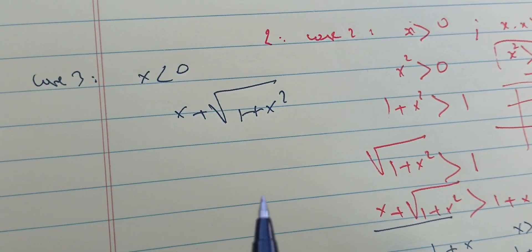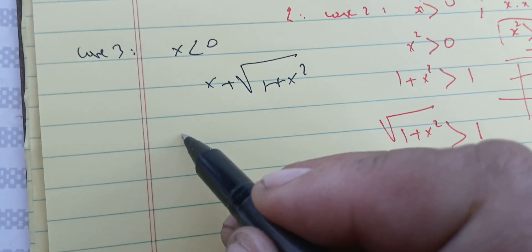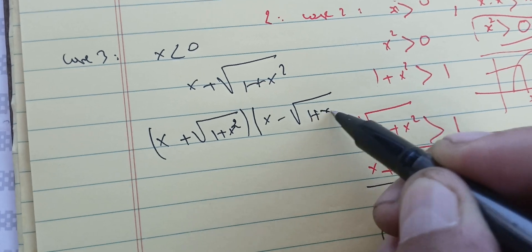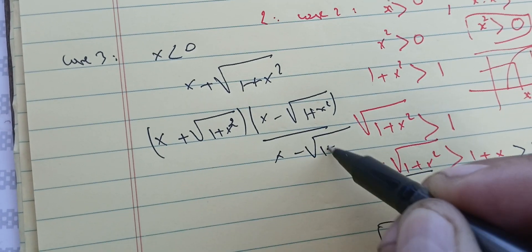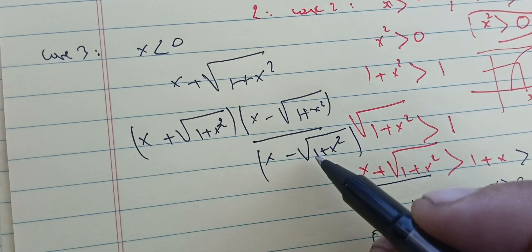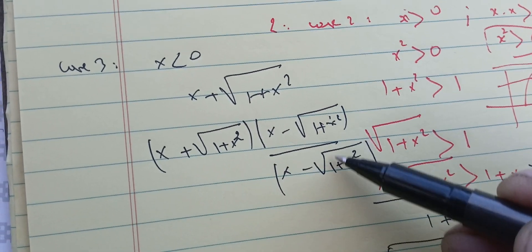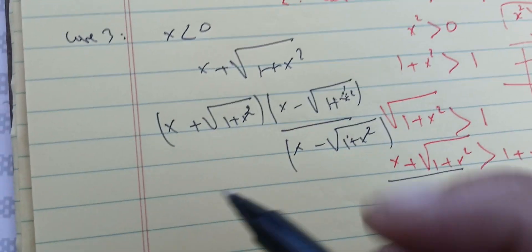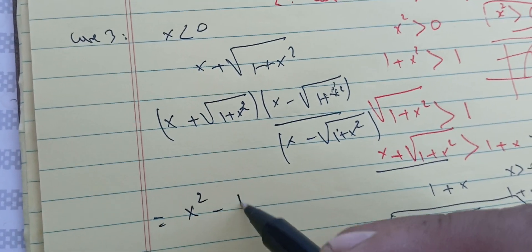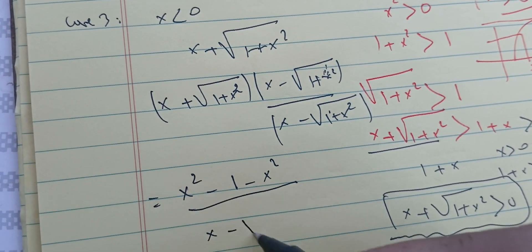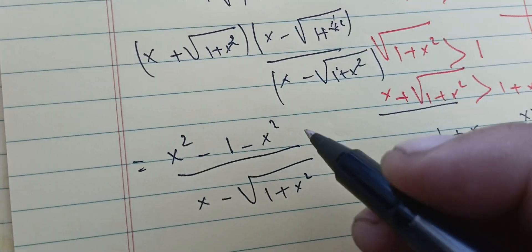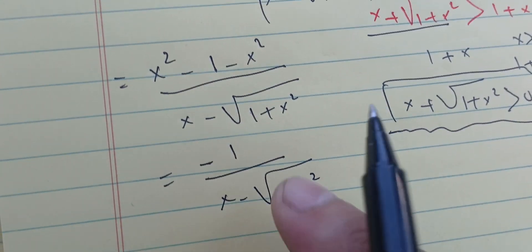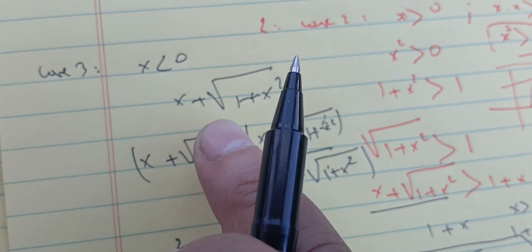We're going to use the conjugate technique. We multiply x plus the square root of one plus x squared by the conjugate (x minus the square root of one plus x squared) over itself. This gives us x squared minus (one plus x squared) over x minus the square root of one plus x squared, which simplifies to minus one over x minus the square root of one plus x squared.